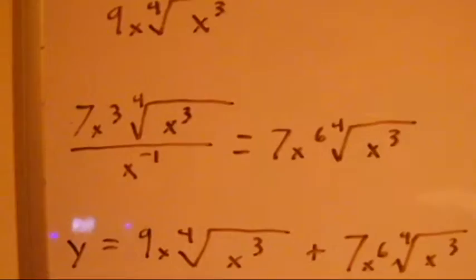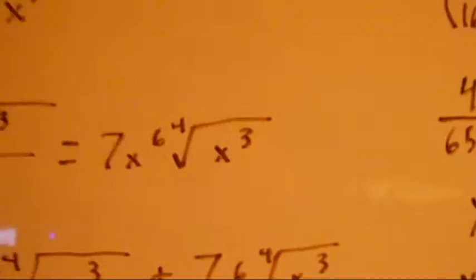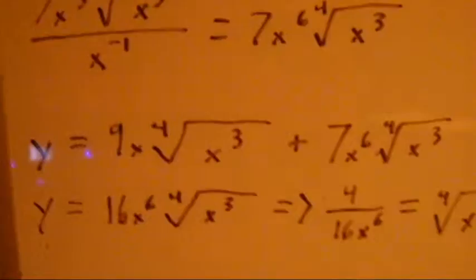Then we get, once all is combined, we come to this. Moving on to the next part of the equation, which is this, once the math is all done, we get 7x to the 6th to the 4th radical of x to the 3rd.